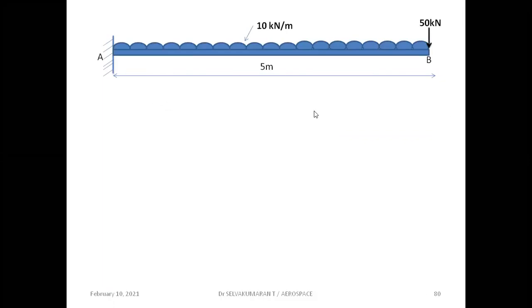Good morning. So far we have seen a cantilever beam subjected to point load alone and a cantilever beam subjected to UDL alone. Now we are going to see a cantilever beam subjected to a point load as well as uniformly distributed load. Cantilever beam AB of length 5 meters is subjected to UDL of 10 kilonewton per meter over the entire span, and also carries a point load of 50 kilonewton acting downward at the free end. We are going to calculate shear force and bending moment values, then plot the shear force and bending moment diagram.